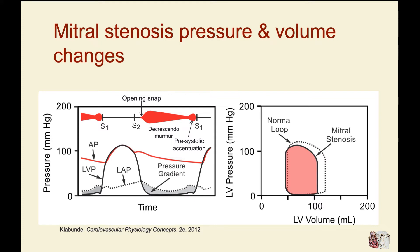Let's now look at the pressure and volume changes in the heart. The aortic pressure and left ventricular pressure tracings look pretty normal — they might be depressed a little bit if the cardiac output is reduced, but otherwise they look pretty normal.